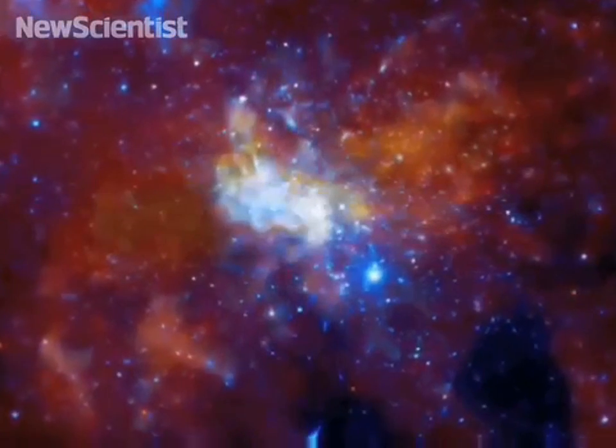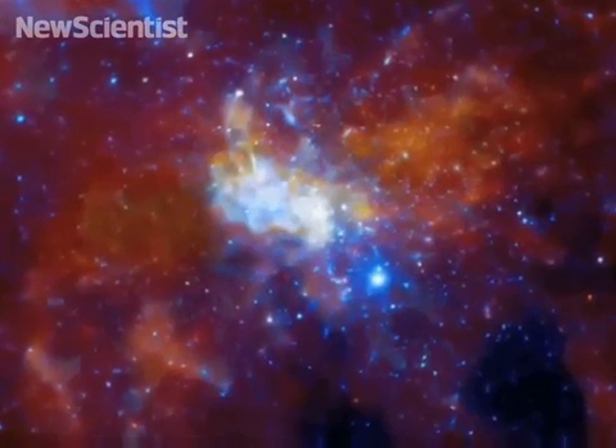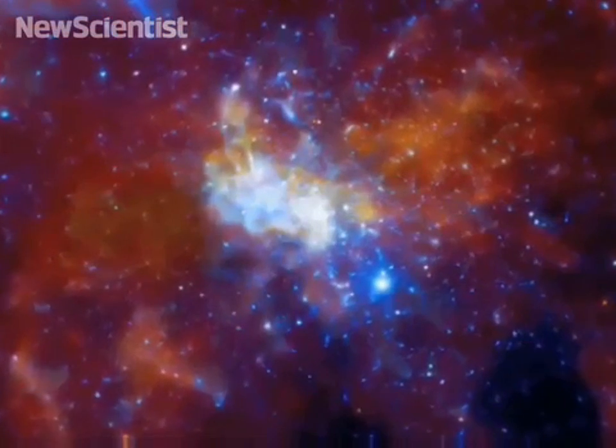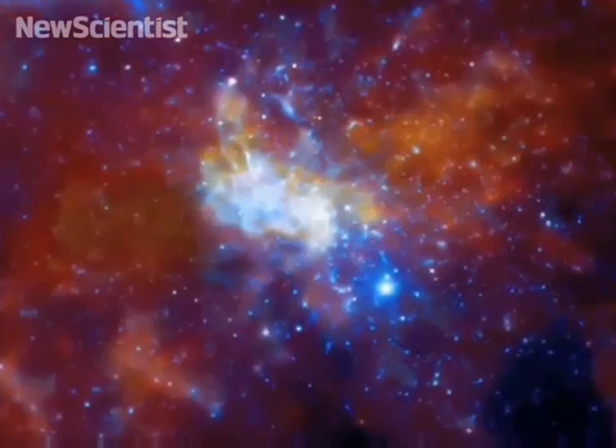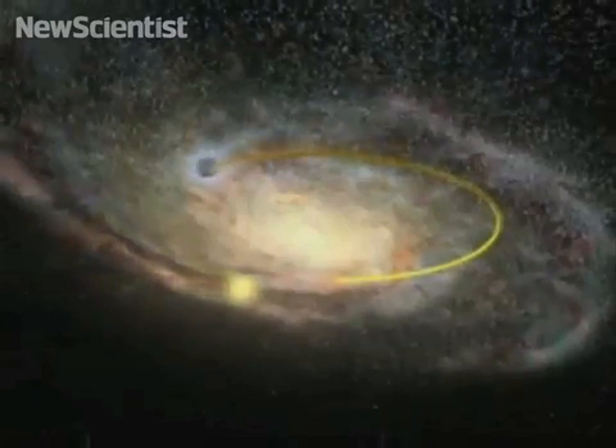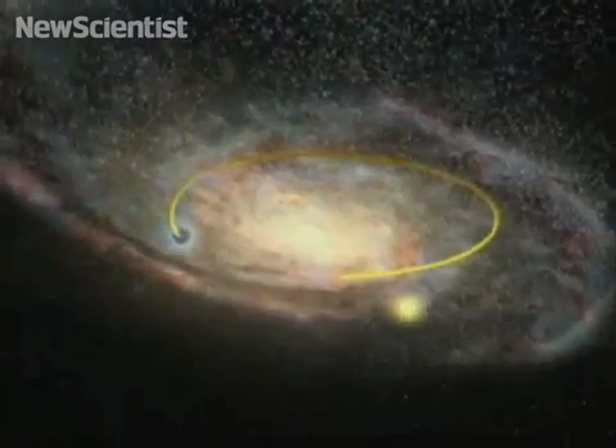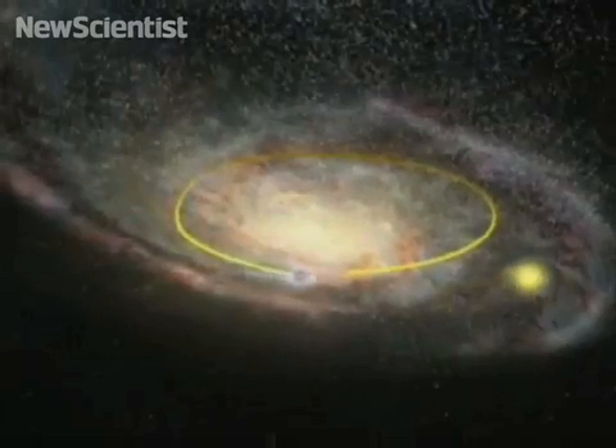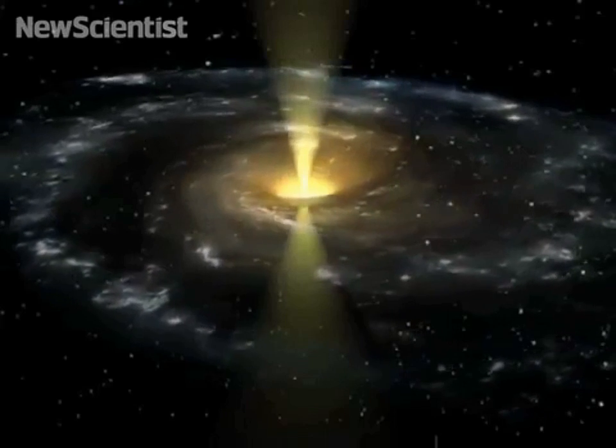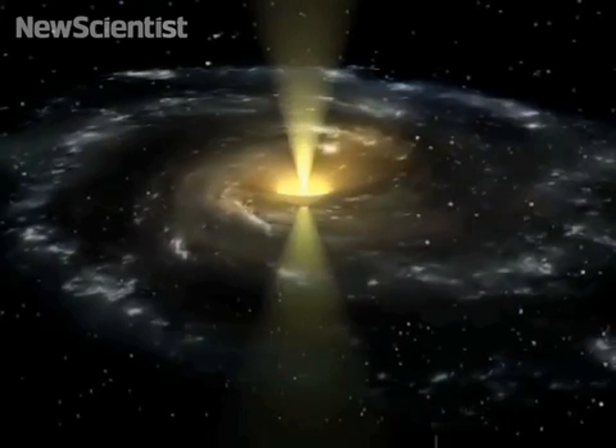Scientists are unsure how supermassive black holes form at the center of galaxies, including the Milky Way. One theory is that they start out as stellar mass black holes and grow over time. They consume nearby stars and gas, which are plentiful at galactic centers.